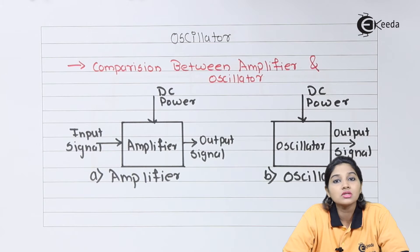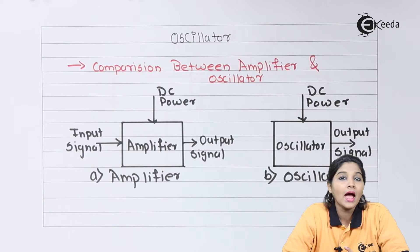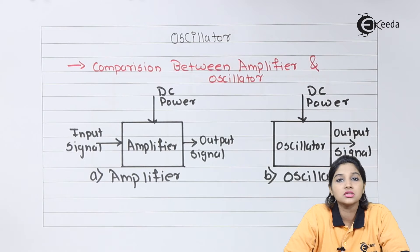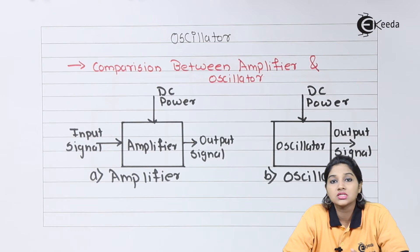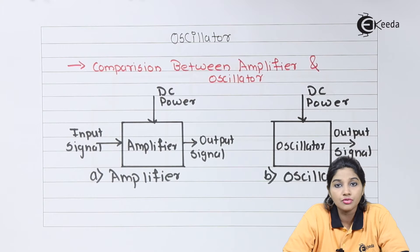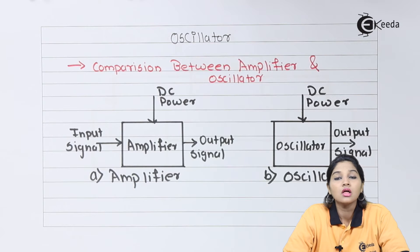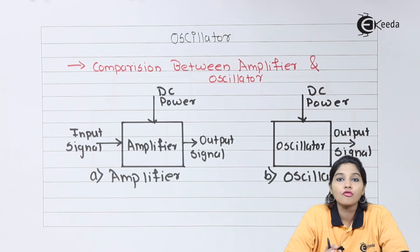So we can say an oscillator is nothing but an amplifier with positive feedback and no input signal. An amplifier requires an input signal as well as a DC power supply, whereas an oscillator does not require any input signal but does require a power supply. As long as the DC power supply is available, we can get a signal at the output of the oscillator.